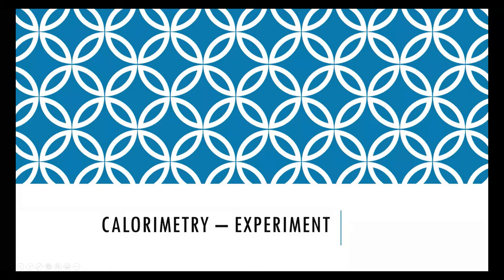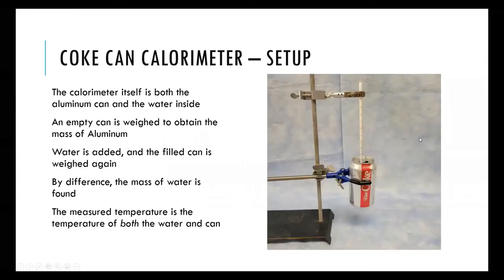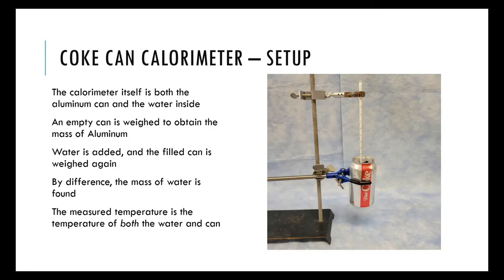In this experiment, you'll be setting up different calorimeters and measuring the heat associated with different reactions. The first calorimeter is a simple aluminum can filled with water — a Coke can calorimeter. This setup is used primarily for simple combustion reactions, and consists of an aluminum can and some water inside. Both are pure substances with their own heat capacities, and together they make up the calorimeter. A thermometer inside records the initial and final temperatures for both the aluminum and the water.